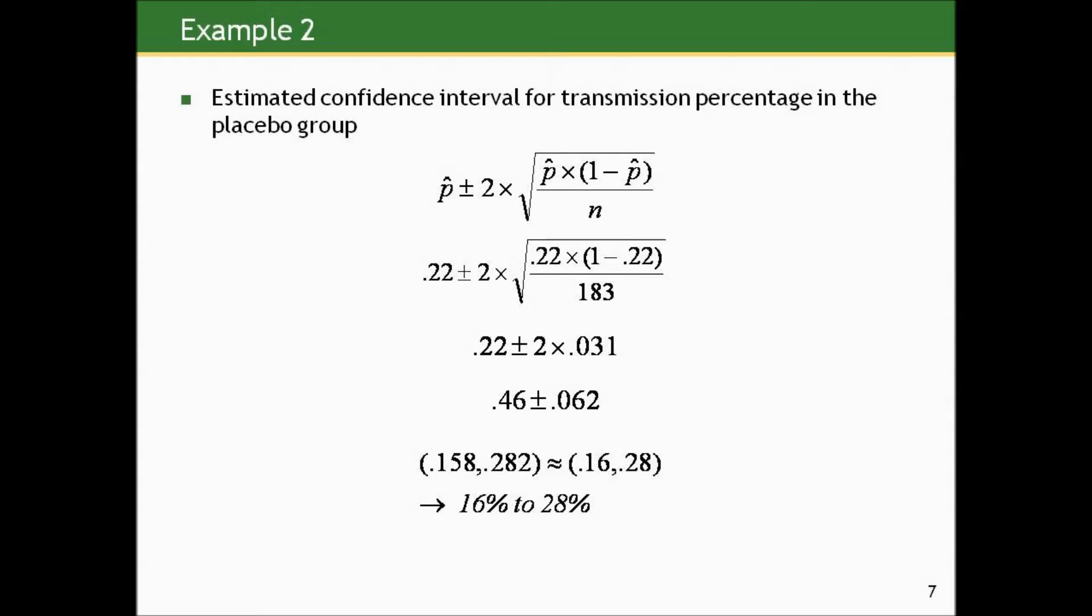Let's look at another example from the maternal infant transmission of HIV study. And remember, we had the proportion of infants in each of the treatment groups who came down with HIV within 18 months after they were born. So let's focus on the placebo group where the p-hat was 22%, the estimated proportion of HIV-infected infants born to untreated mothers, that is, infants who got HIV within 18 months of birth, was 22%, based on a sample of 183.